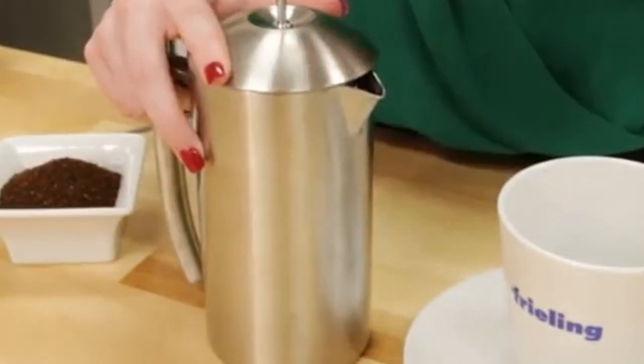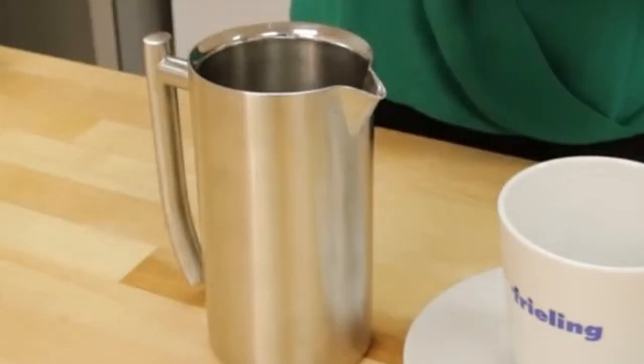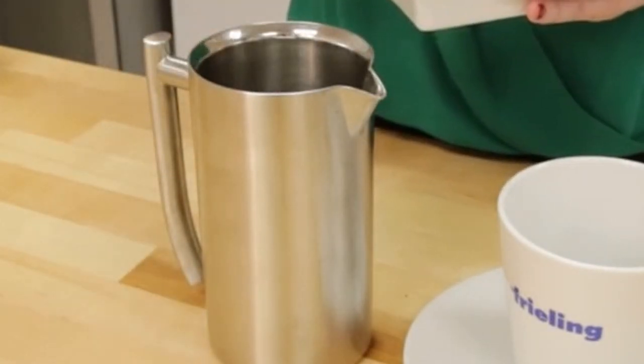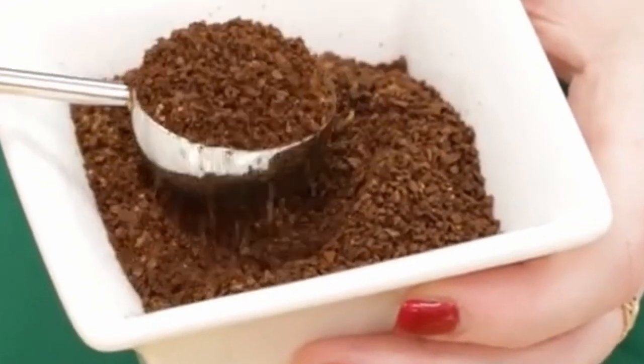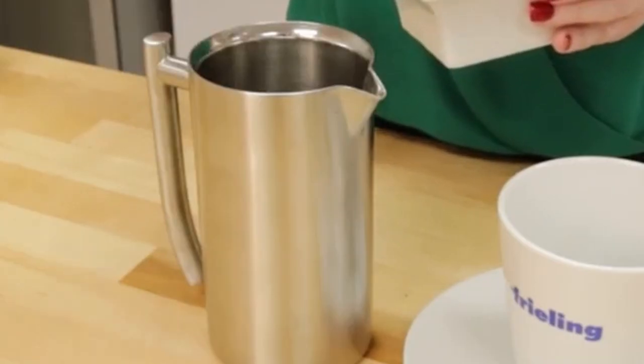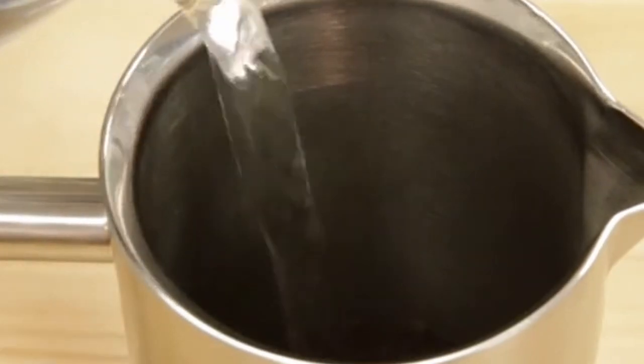To use, add 2 tablespoons ground coffee per cup of water, adjusting for taste. Pour slightly cooler than boiling water, stir, cover, brew for 4 minutes, stir again and gently press down on the plunger.